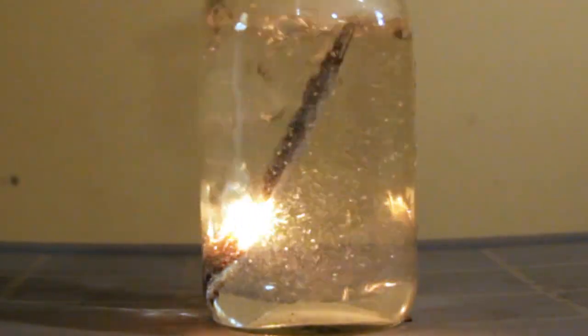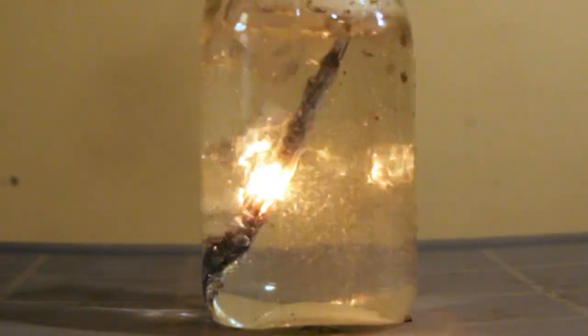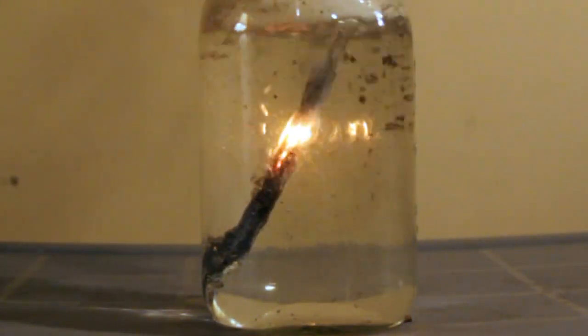The oxygen released allows the combustion of more potassium nitrate, which releases more oxygen, and this reaction repeats over and over until all the chemicals are fully burned off the sparklers.